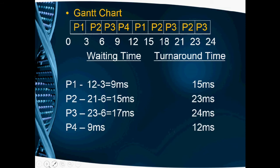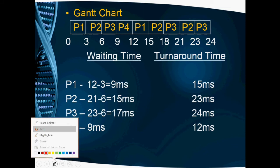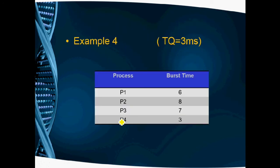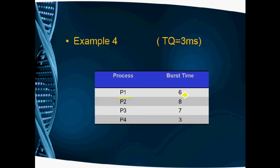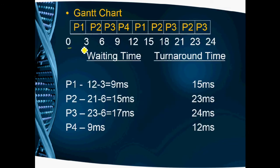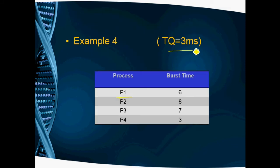Looking at the Gantt chart: round robin is FCFS-oriented but preemption is added. We start P1 execution first, always starting at time 0. P1's total burst time is 6, but because the time quantum is 3 milliseconds, P1 executes only up to 3 milliseconds. Starting from 0, P1 runs up to 3 milliseconds. After that, P1 has a remaining burst time of 3 milliseconds.